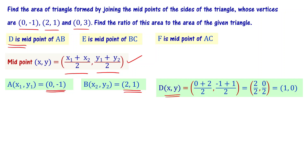For midpoint D of AB: D = ((0 + 2) / 2, (-1 + 1) / 2) = (2/2, 0/2) = (1, 0). So the coordinates of D are (1, 0).